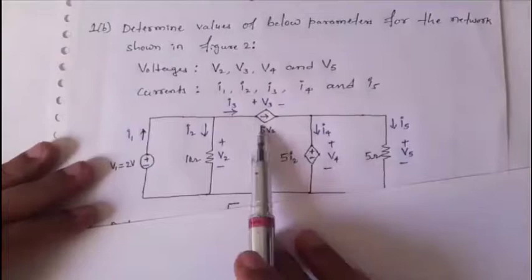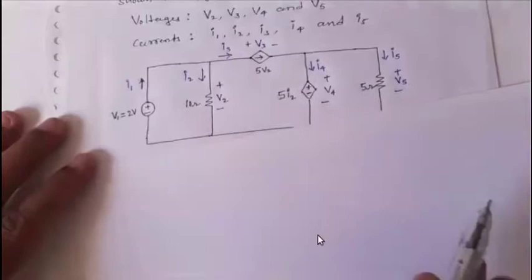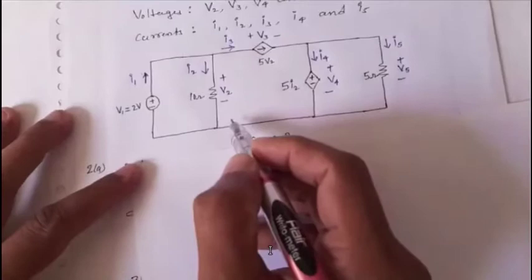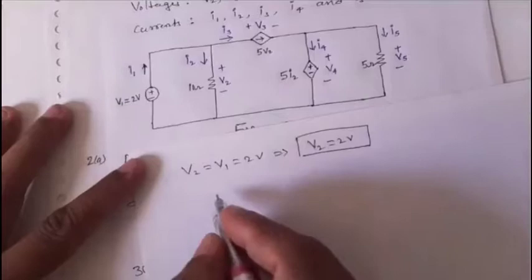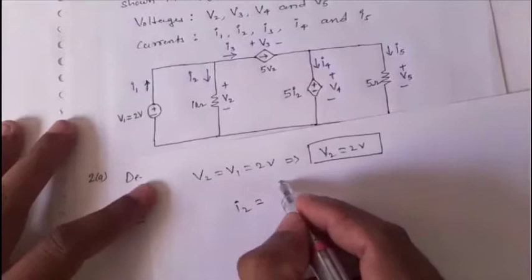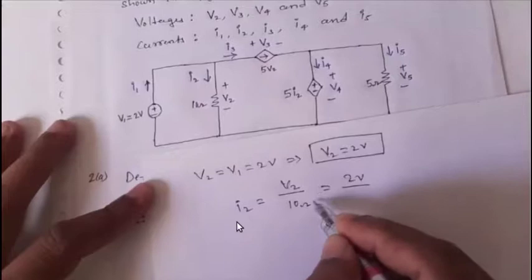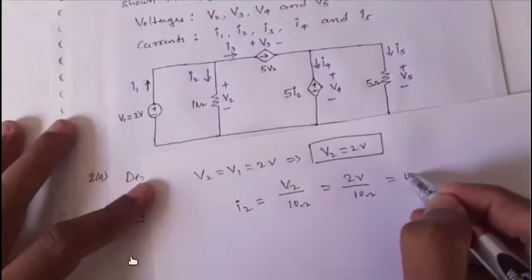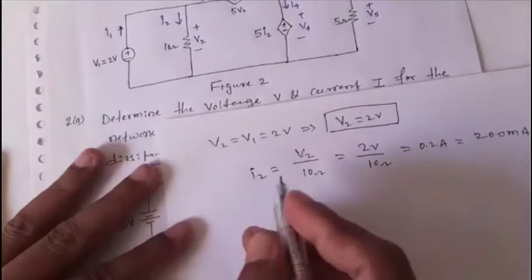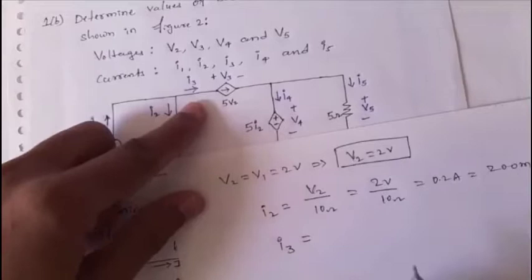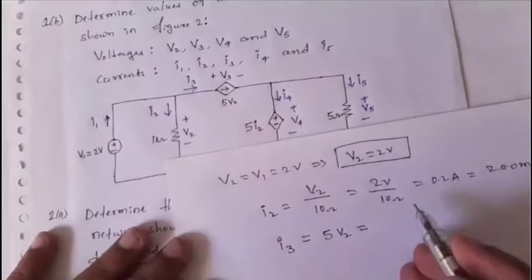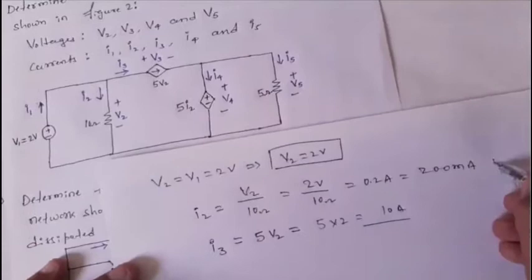The 10 Ω resistor is in parallel with v1, so the voltage across 10 Ω is v2 = v1 = 2 V. Current i2 through the 10 Ω resistor by Ohm's law: i2 = v2 / 10 = 2 / 10 = 0.2 A or 200 mA. The dependent current source i3 = 5 × v2 = 5 × 2 = 10 A.